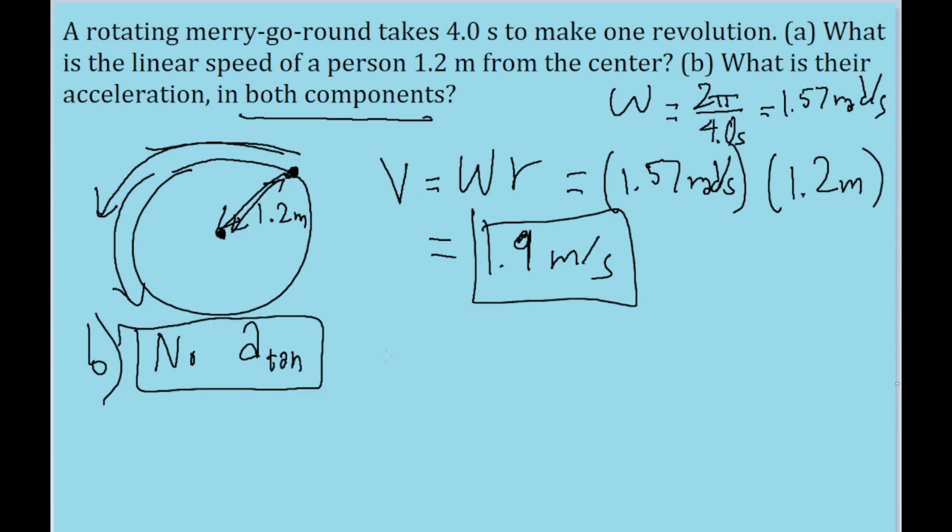But as I said a minute ago, there is always going to be a radial component. Now fortunately, there's a very simple formula for that. The radial component of acceleration has a very simple formula. It's equal to the square of the angular velocity times the radius, the radial distance from the center.